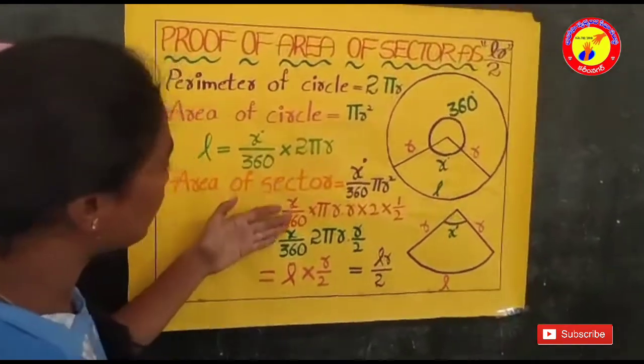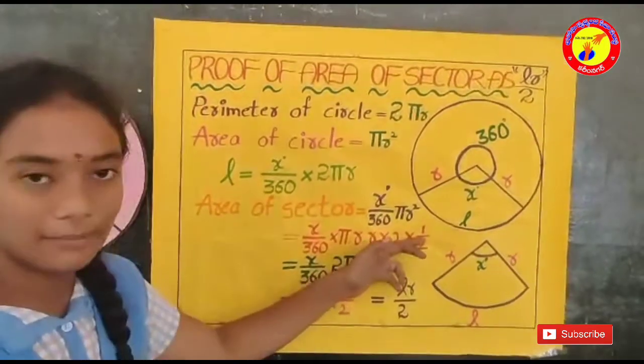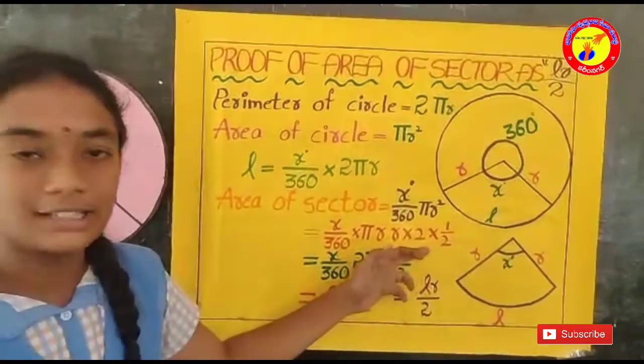Here is equal to x by 360 into π into R into 2 into 1 by 2. If we multiply πR square into 2 into 1 by 2, the value does not change.